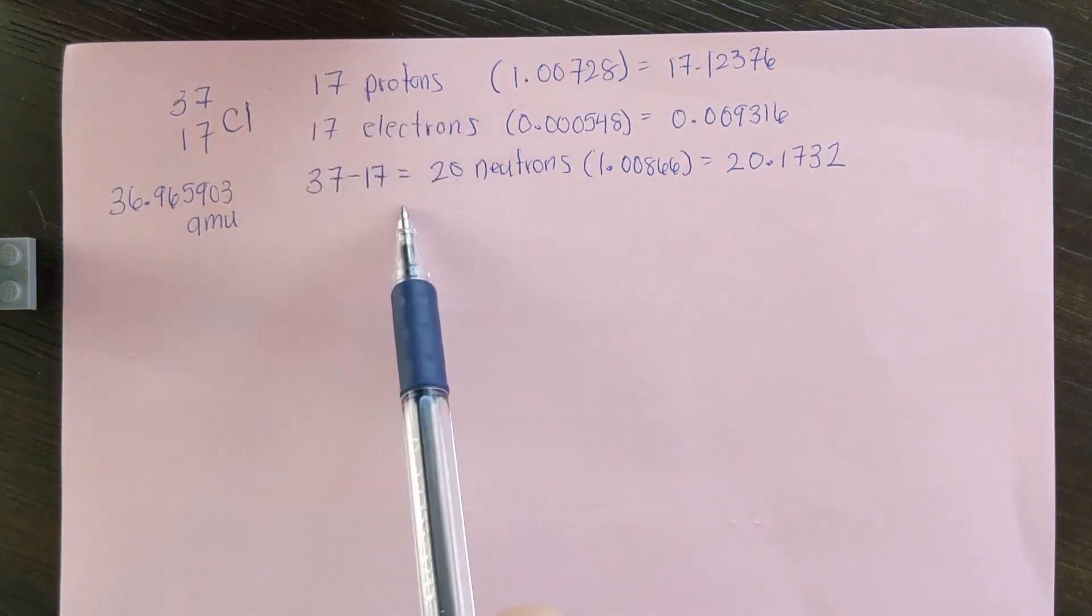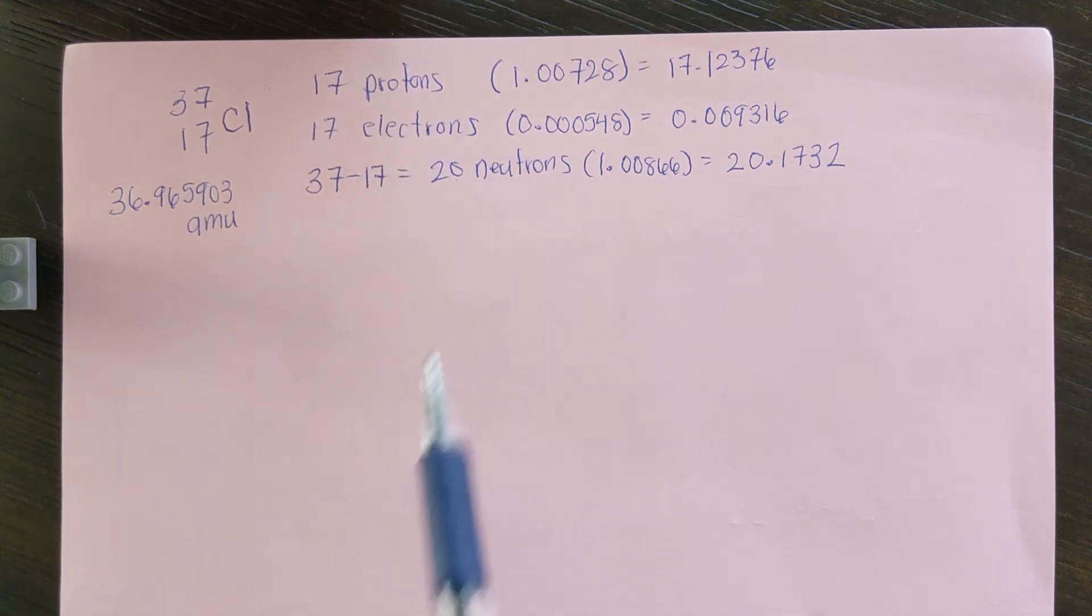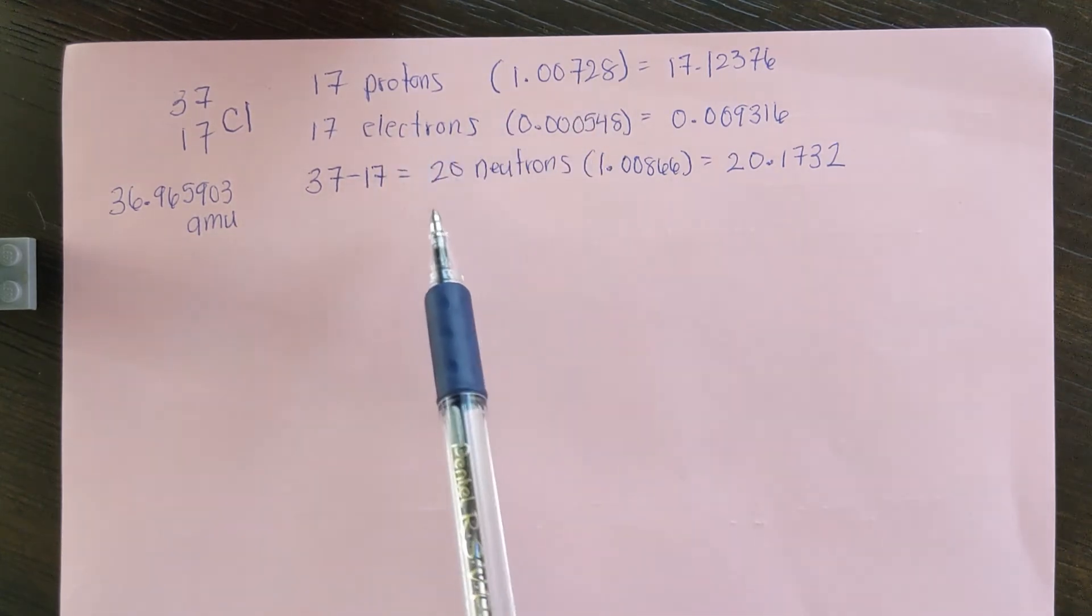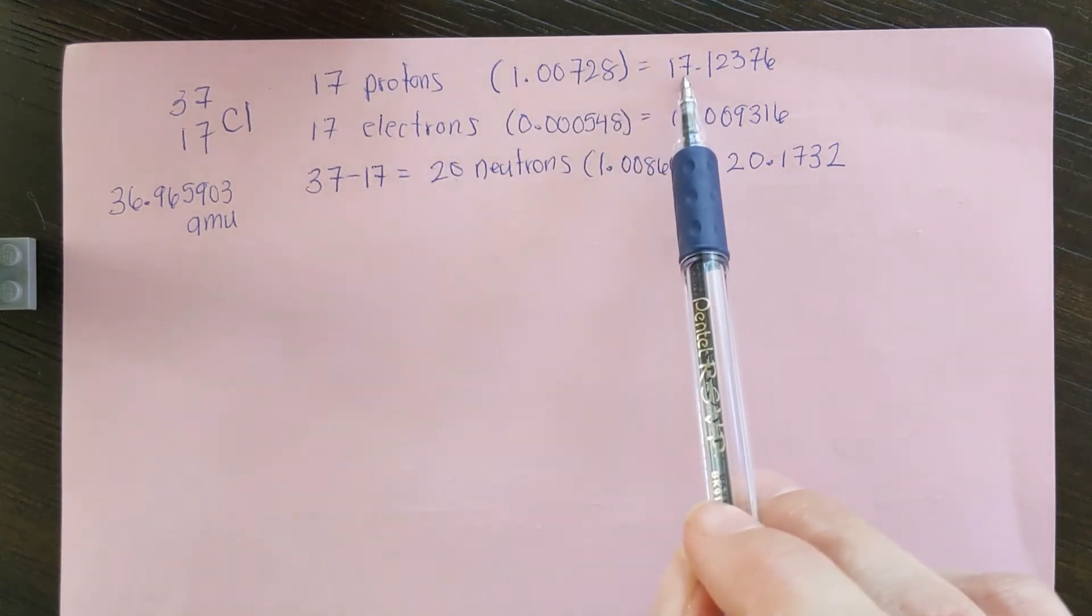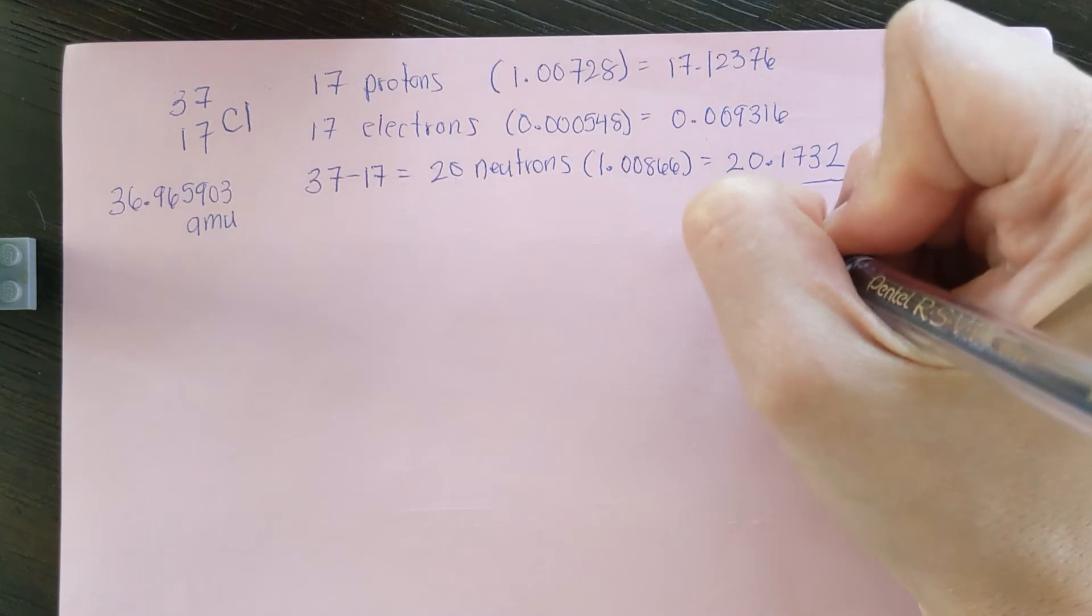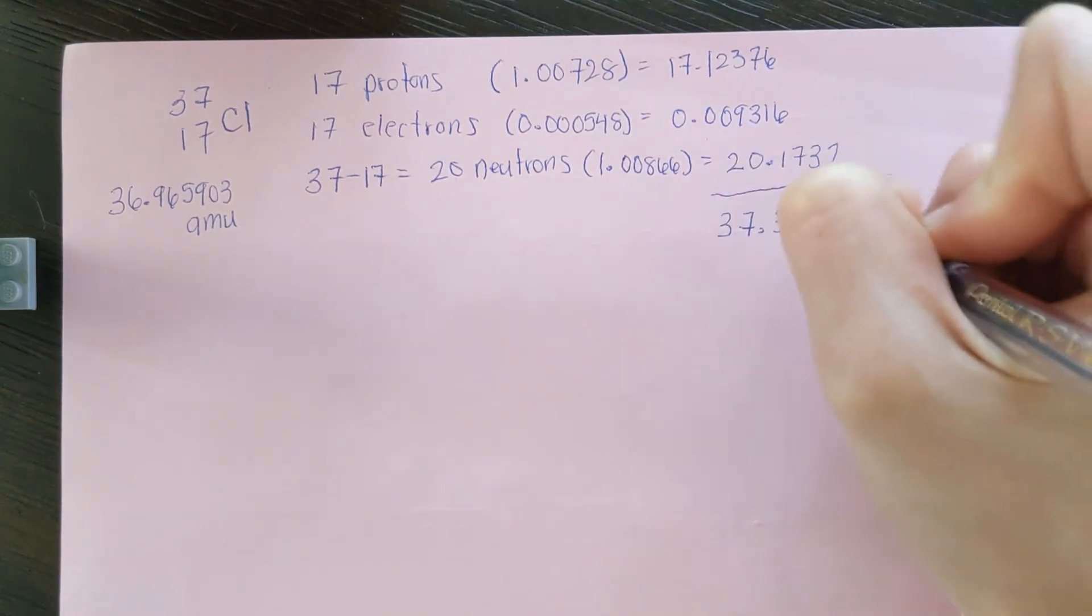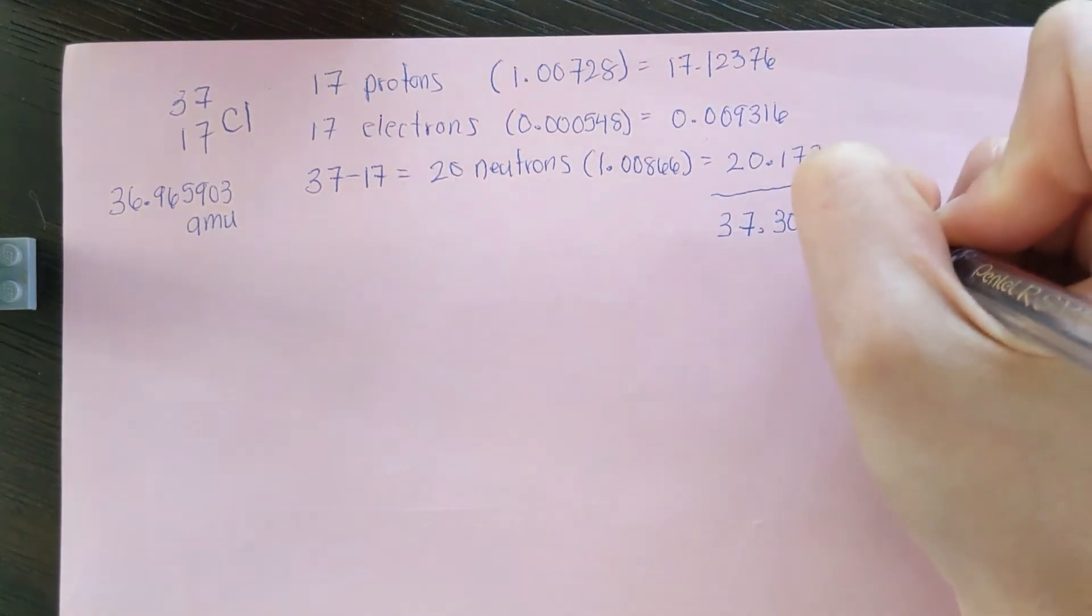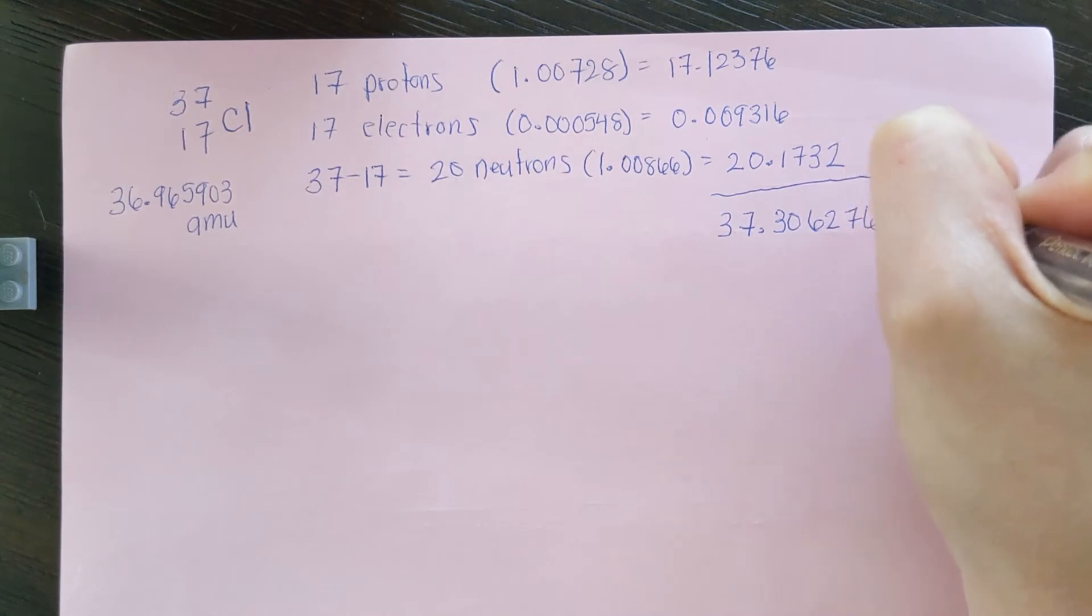So if all that an atom was was the mass of these particles, and nothing lost in the process, if we sum all of these, we should get the mass of the atom. So when we add this together, we get 37.306276 amu.